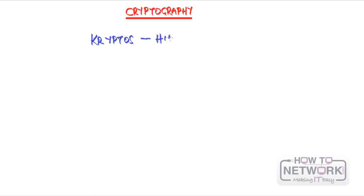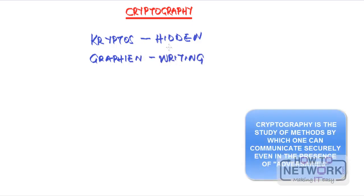Cryptography is the basic building block of any secure communication, so we need to explore this topic first. The word comes from two Greek words: cryptos, which means hidden, and graphene, which means writing. So basically, cryptography is the study of hidden writing, or more accurately, the study of methods by which one can communicate securely, even in the presence of adversaries.